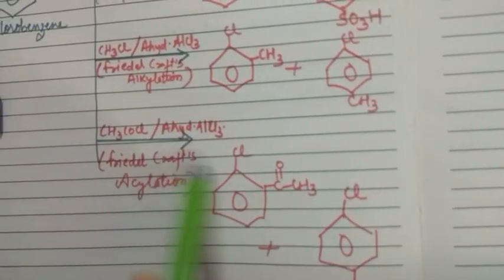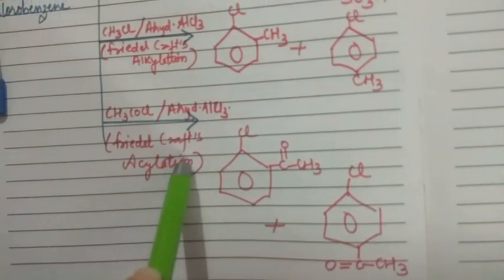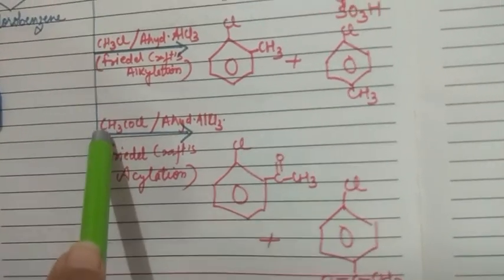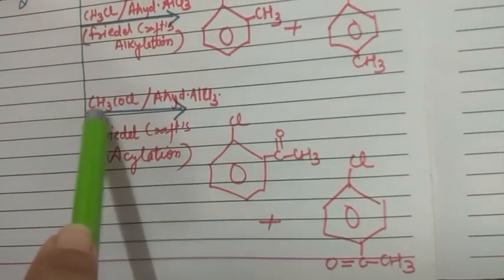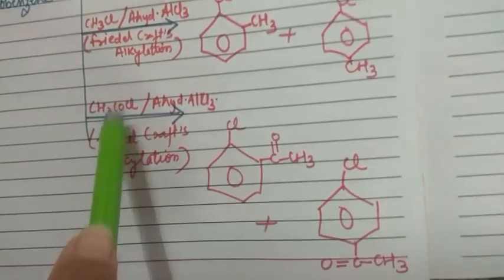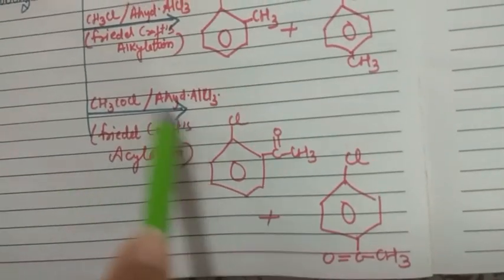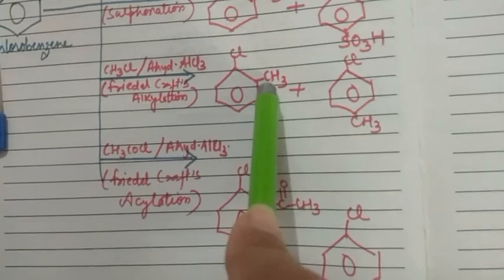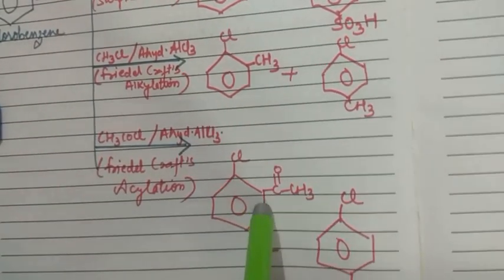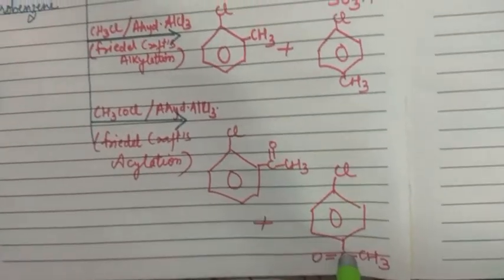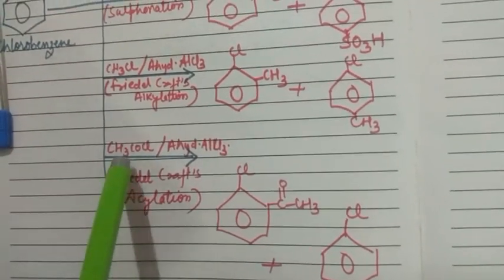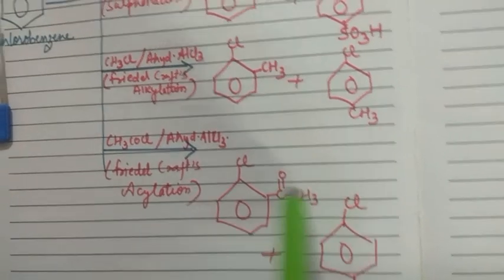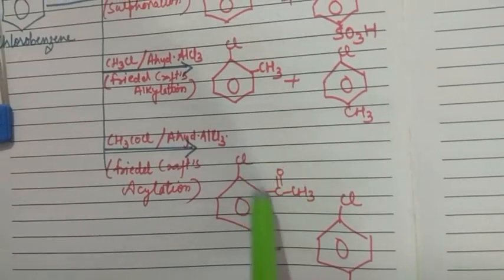The next reaction is Friedel-Crafts acylation reaction. Here we will add an acyl group. The acyl group will attack at the ortho and para position. The reagent used is CH₃COCl in the presence of anhydrous AlCl₃. One mistake students commit most of the time regarding the acyl group — you will make the bond with the carbonyl carbon, not with the methyl group. The bond will be with the carbonyl carbon.